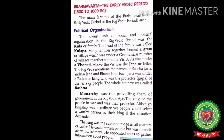Many families together formed a Gram, or village, which was under a Gramani. A number of villages together formed a Vis, and the Vis was under a Vispati. Above the Vis was the Jan, or tribe. The Rig Veda mentions the names of Panch Jan, Yadav Jan, and Bharat Jan. Each Jan was under a Rajan, or king, who was the protector of the Jan or people. The whole country was called Rashtra.